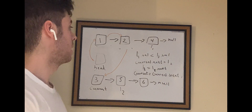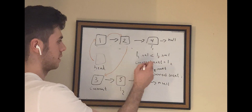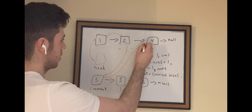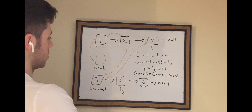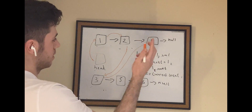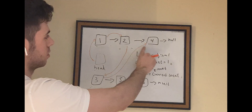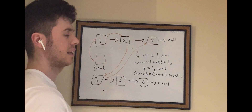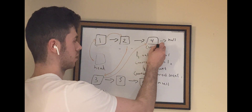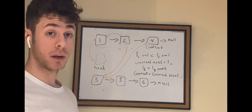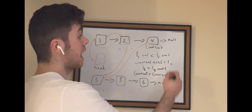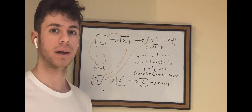By now hopefully you get the idea. Is 4 less than 5? It is, so the next node is 4. We've now iterated through the entire first linked list. The current node is here, and L1 moves to L1.next — so now L1 is actually null. And what does that mean? That means the while loop has to terminate, because our condition was that both L1 and L2 must not equal null.